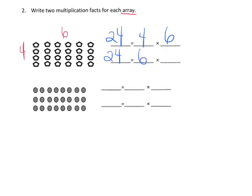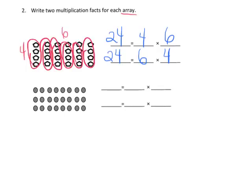Four rows of six means four times six is twenty-four, which means we could also write twenty-four equals six times four. For six times four, the six stands for the fact that we have six columns, so we might call this six columns of four. Whereas four times six means we have four rows of six.